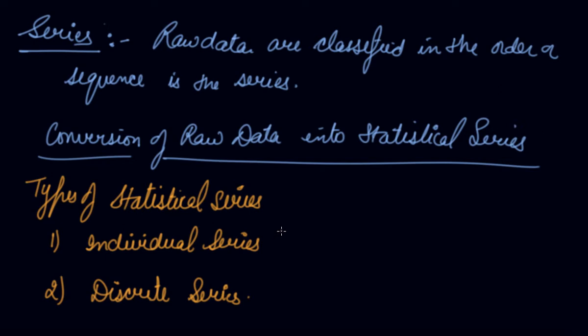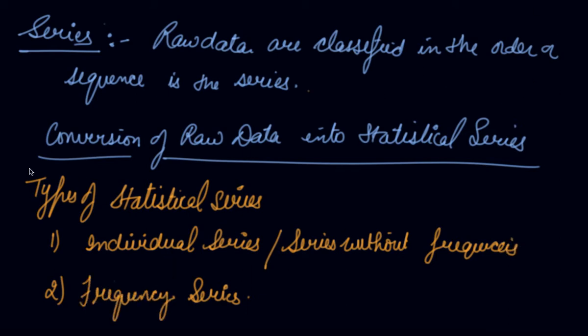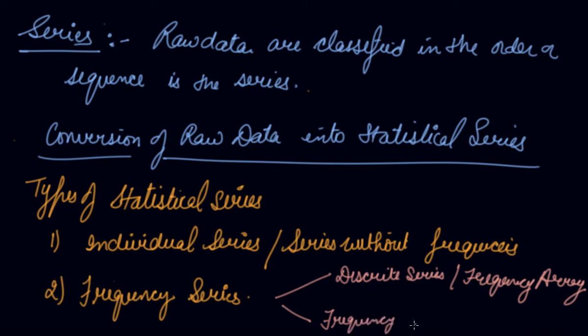series. Individual series are also called series without frequencies. The frequency series are further classified into two types: discrete series or frequency arrays, and frequency distribution or